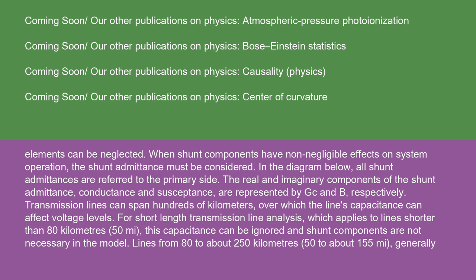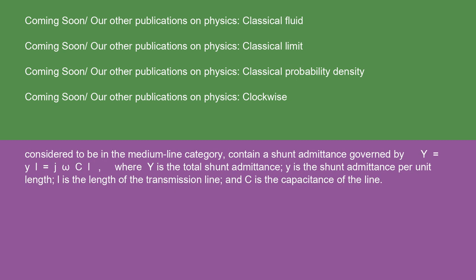Lines from 80 to about 250 kilometers, or 50 to about 155 miles, generally considered to be in the medium line category, contain a shunt admittance governed by Y = yL = jωCL, where Y is the total shunt admittance, y is the shunt admittance per unit length, L is the length of the transmission line, and C is the capacitance of the line.